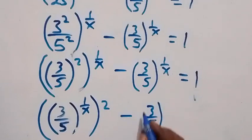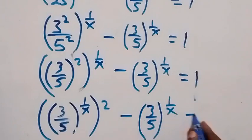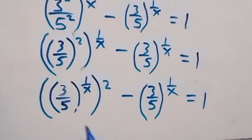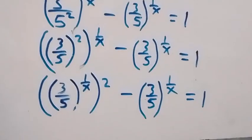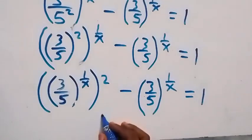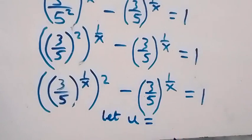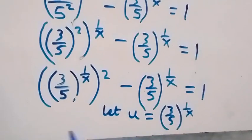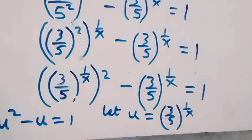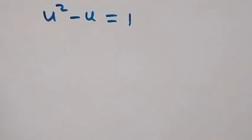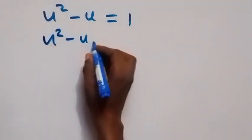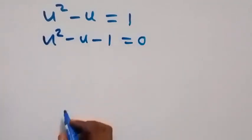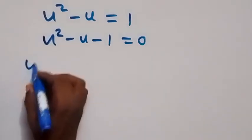This gives us 3 over 5 raised to power 1 over x, all squared, minus 3 over 5 raised to power 1 over x, equals to 1. So we can use a substitution: let u equal 3 over 5 all raised to power 1 over x. Then this equation becomes u squared minus u equals to 1, which rearranges to u squared minus u minus 1 equals to 0.